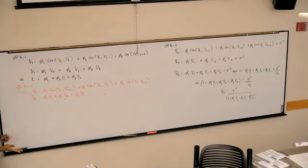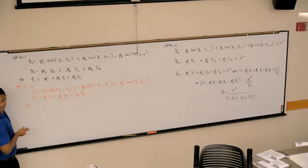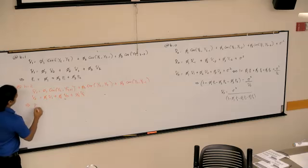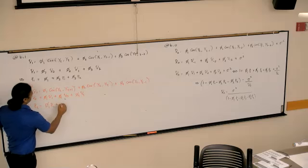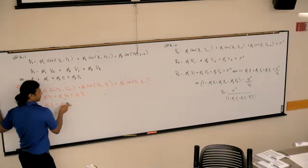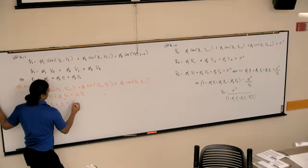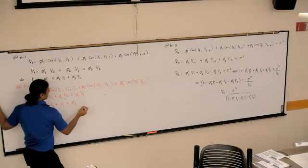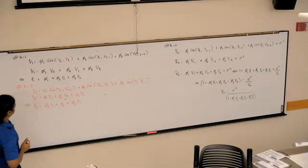Now, if I divide by gamma nought on both sides, what is gamma 2 divided by gamma nought? Rho 2. Phi 1, same on that side. Rho 1. Phi 2, gamma nought over gamma nought is 1. And phi 3, gamma 1 over gamma nought is rho 1.